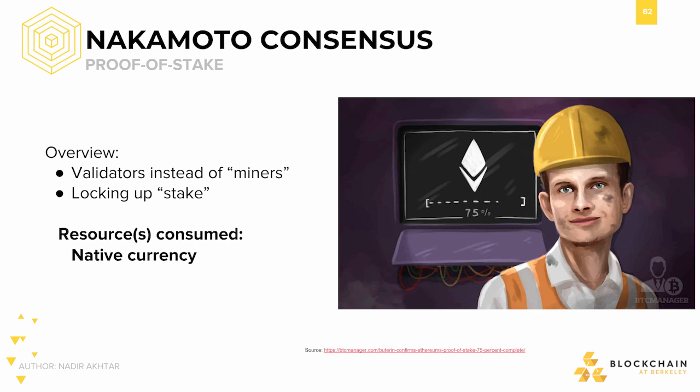The next example of Nakamoto Consensus is proof-of-stake. This one's a bit tricky since there are very many different implementations of proof-of-stake, but in general, some of them can be classified as Nakamoto Consensus mechanisms. Like the miners in proof-of-work, validators in proof-of-stake are tasked with creating updates and supporting the network. Instead of expending computational power, proof-of-stake uses its native currency — the more native currency a validator stakes, the more likely they are to be elected to propose the next update. There's a lot to talk about with proof-of-stake, so we'll go into that in the next section.